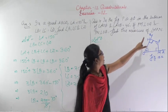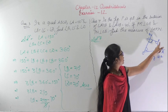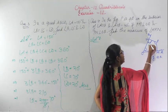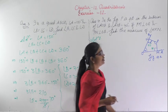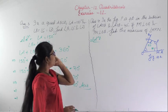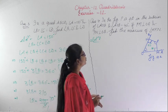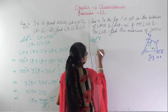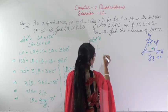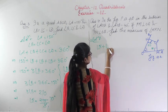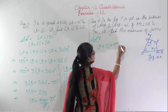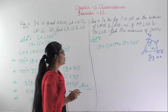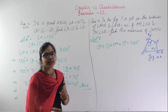Find the measure of angle MPN. Since PM and PN are perpendicular, those angles will be 90 degrees each. So we have three angles known. We know that in a quadrilateral, the sum of interior angles is 360 degrees. So angle N plus angle O plus angle M plus angle P equals 360 degrees.